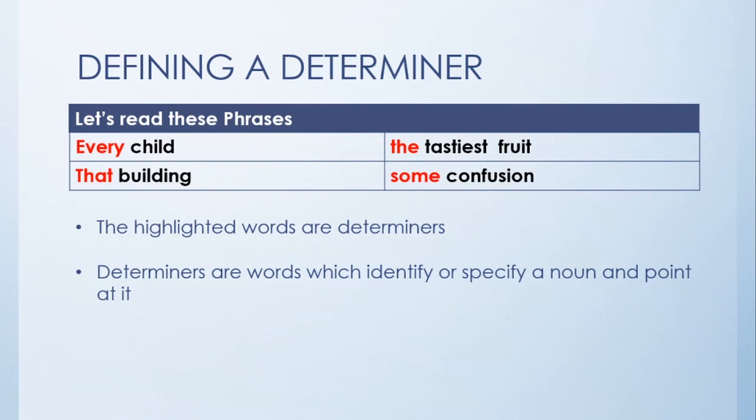So how do we define a determiner? Determiners are words which identify or specify a noun and point at it.